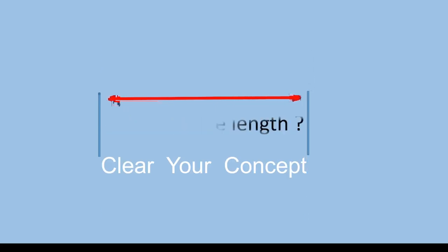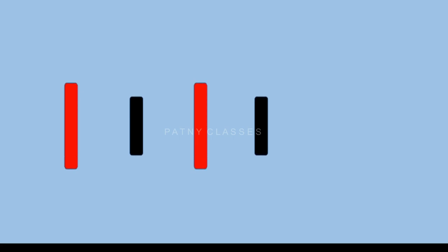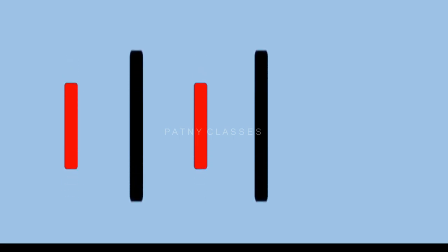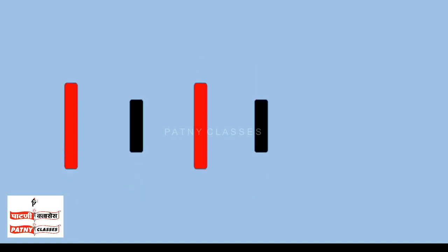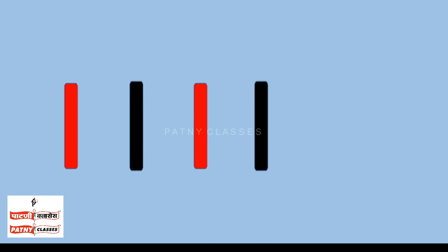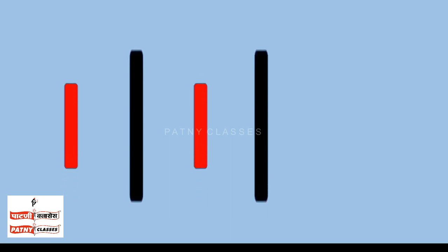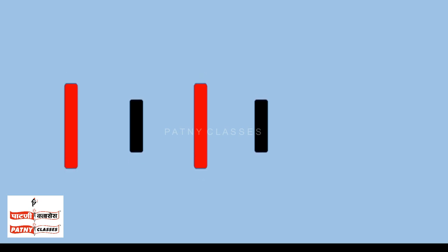Now let's talk about the meaning of wavelength on the basis of wave motion. Consider the vibration of red particles and black particles. We notice the vibration of red particles are the same, and vibration of both black particles is also the same. But the vibration of red particles and black particles is not the same — the phase of vibration of black particles and red particles are different.